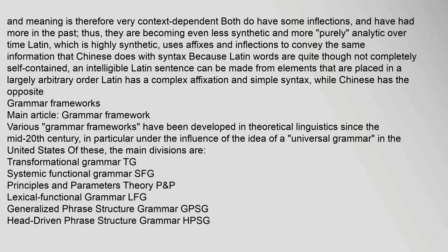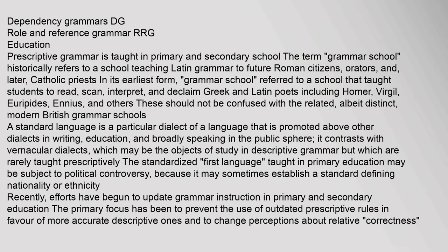Various grammar frameworks have been developed in theoretical linguistics since the mid-20th century, in particular under the influence of the idea of a universal grammar. In the United States, the main divisions are Transformational Grammar (TG), Systemic Functional Grammar (SFG), Principles and Parameters Theory, Dependency Grammars (DG), and Role and Reference Grammar (RRG).